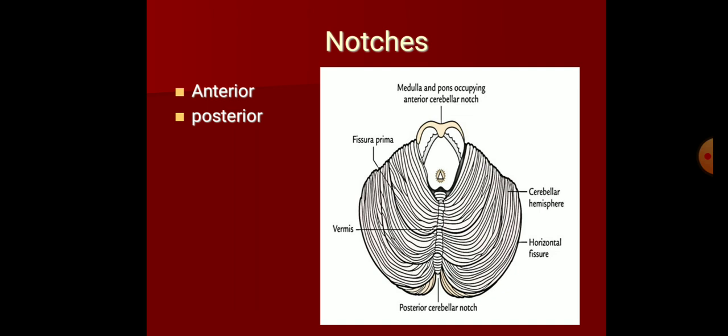The cerebellum has two notches: an anterior notch and a posterior notch. The anterior notch accommodates the medulla and pons. The posterior cerebellar notch lodges a dural fold called the falx cerebelli. So near the cerebellum you have two dural folds: the tentorium cerebelli, which forms a tent above it, and the falx cerebelli, which extends into the posterior cerebellar notch.